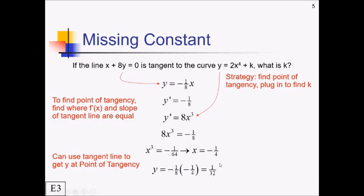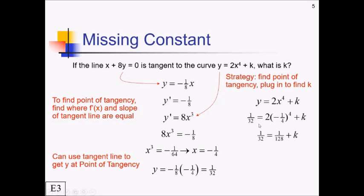Now I've got an x and a y. Let's plug into the original equation: 1/32 equals 2 times (negative 1/4)⁴ plus k. Raising negative 1/4 to the fourth power gives 1/256. Multiplying by 2 gives 1/128. Since 1/32 equals 4/128, subtracting 1/128 gives us k equals 3/128.